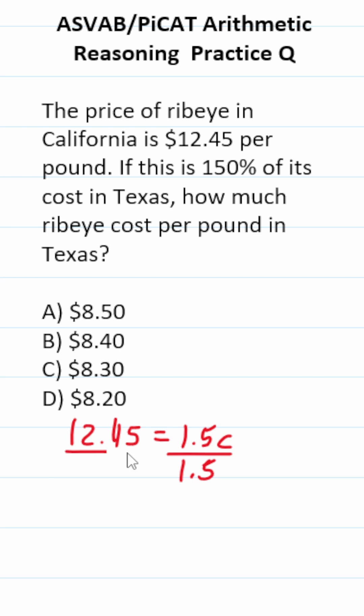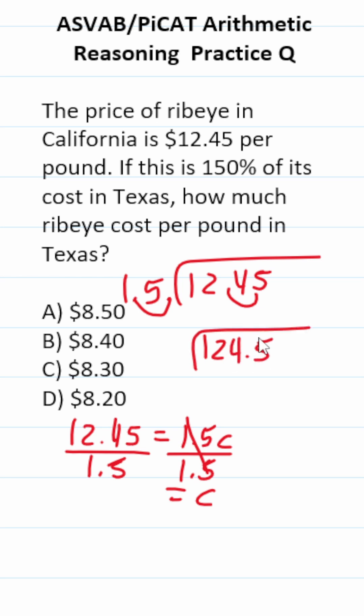We're solving for C, so we're going to divide both sides by 1.5. This crosses out, leaving you with C over here. So this becomes $12.45 divided by 1.5. We've got to move our decimal here and here a corresponding number of times. So this becomes $124.5 divided by 15.